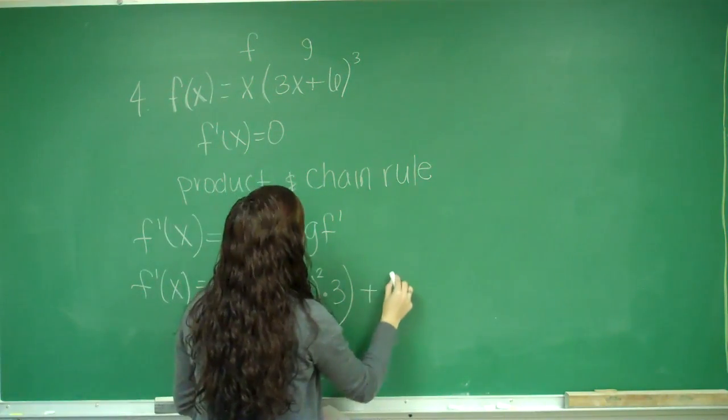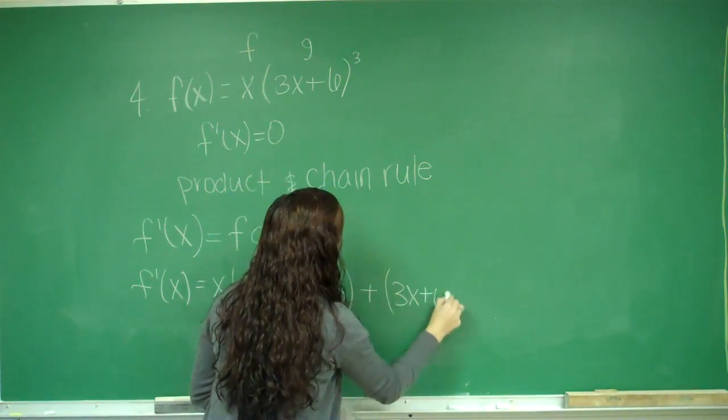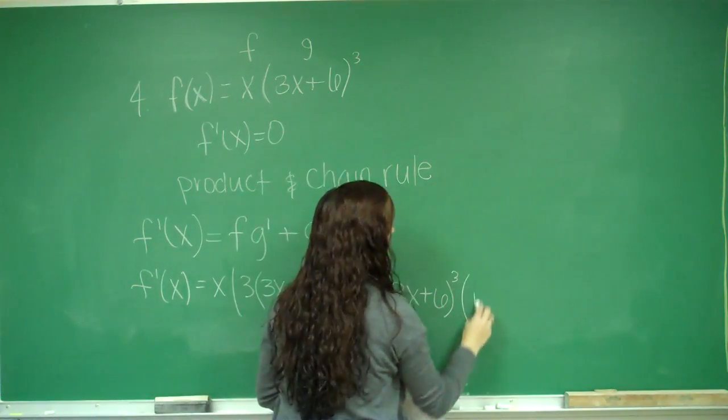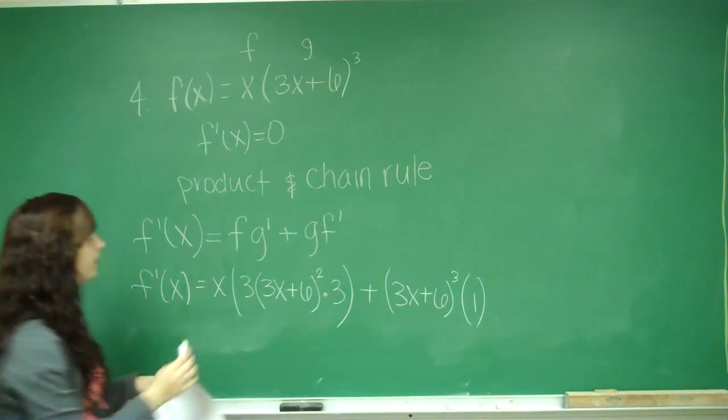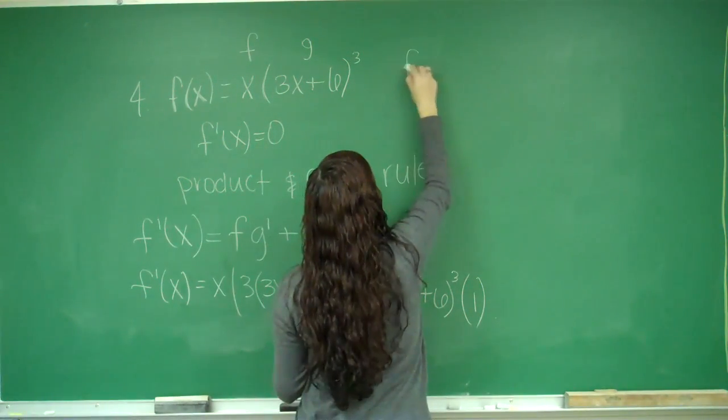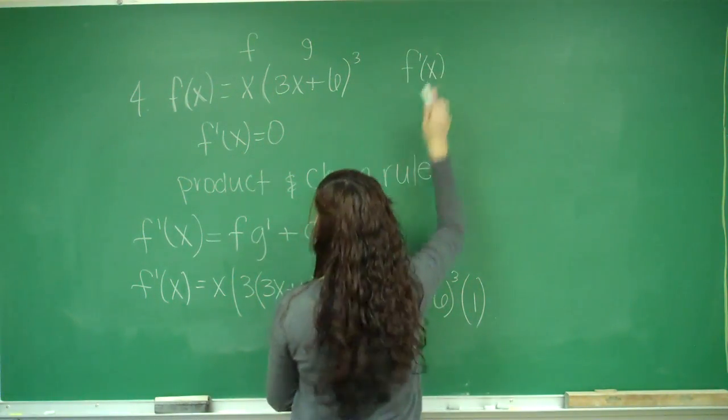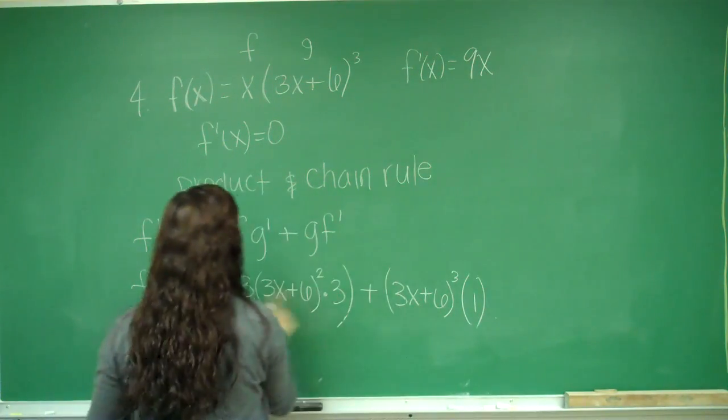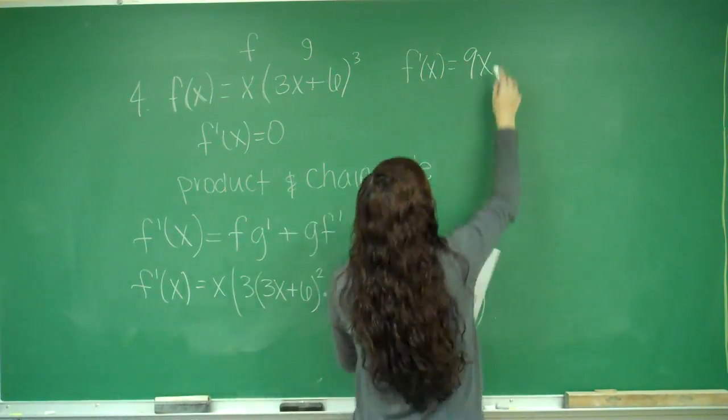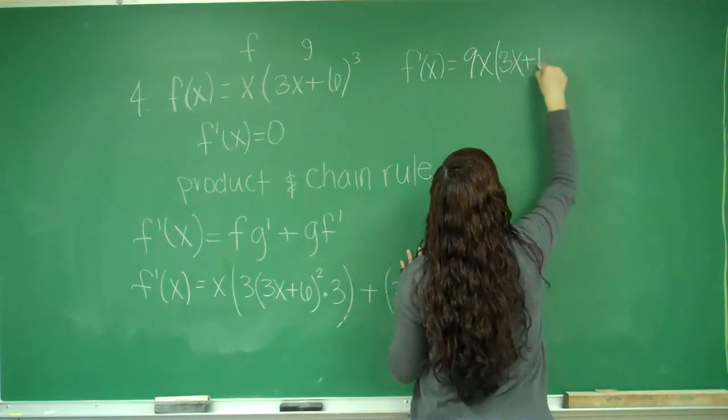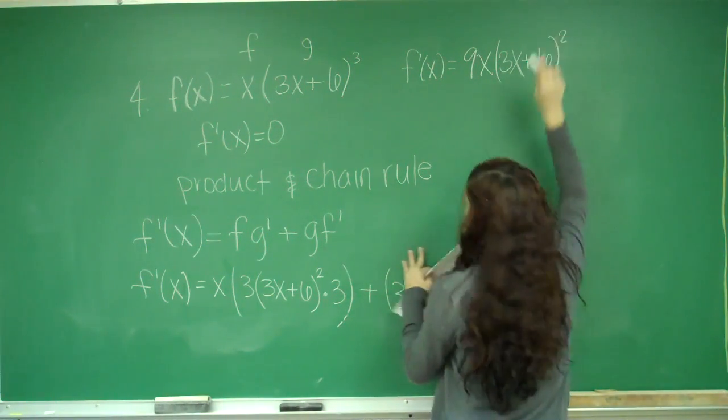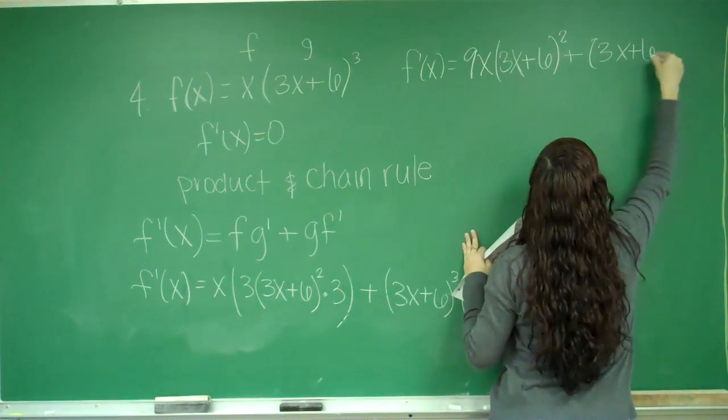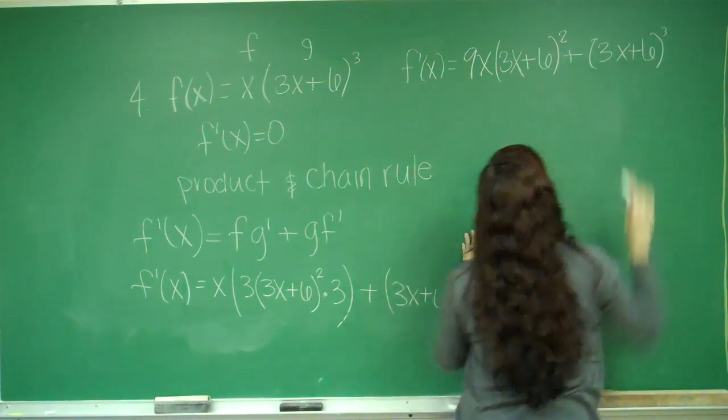Now I add g, which is (3x plus 6) cubed, times f prime of x, which is just 1. So now I simplify. So f prime of x is going to be equal to 9x times (3x plus 6) squared plus (3x plus 6) cubed.